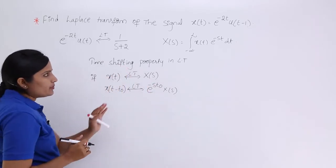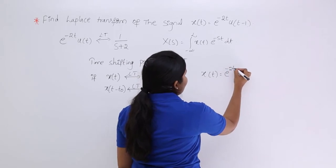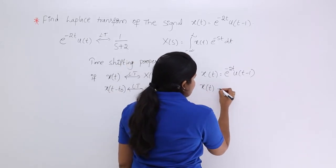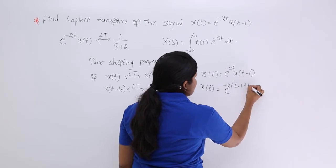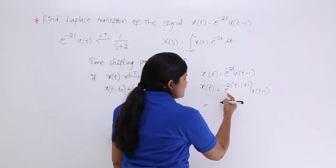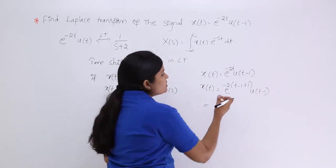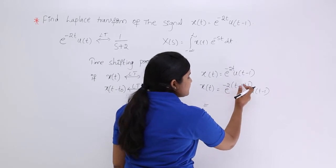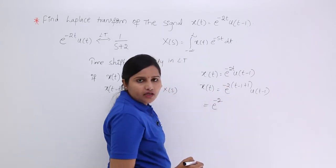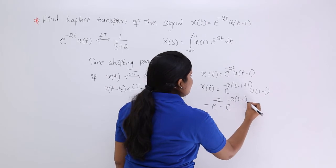Now I want to solve the problem using this property. My signal is x(t) = e^(-2t)·u(t-1). I rewrite the exponential as: e^(-2t) = e^(-2·[(t-1)+1]) = e^(-2) · e^(-2(t-1)). So the signal becomes e^(-2) · e^(-2(t-1)) · u(t-1). I separated out the constant e^(-2) by keeping (t-1) in the exponential to match the argument of the unit step.